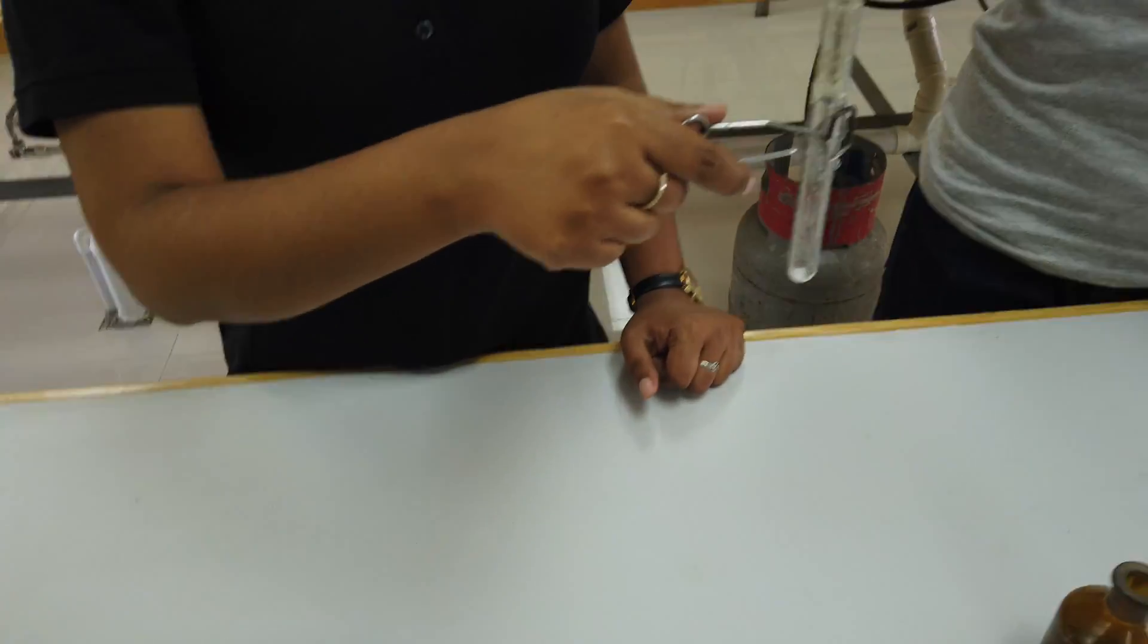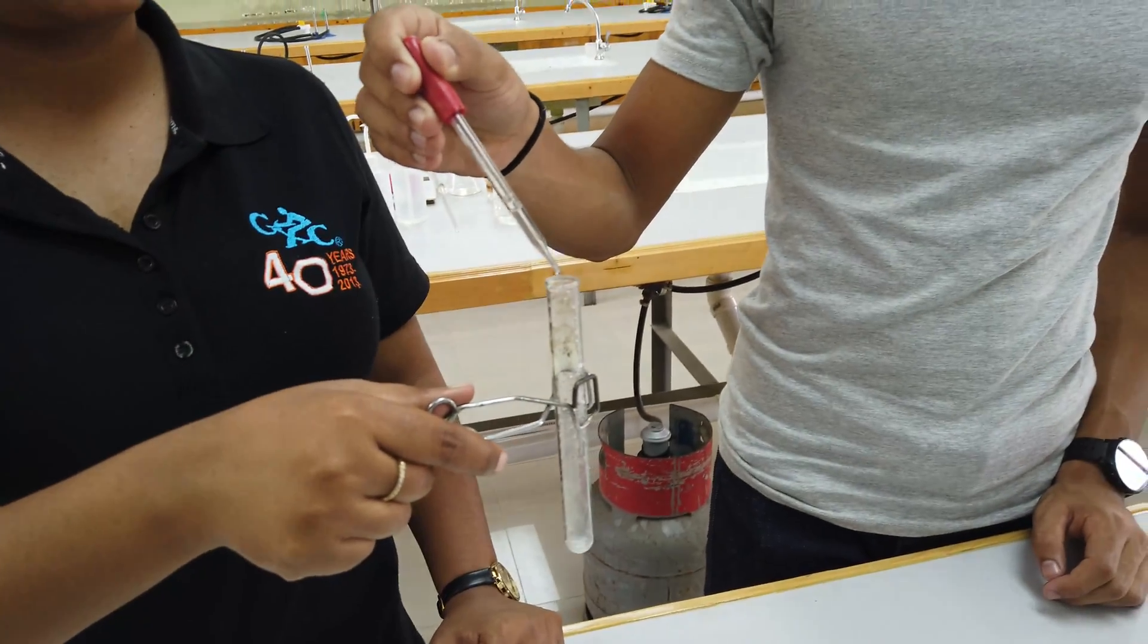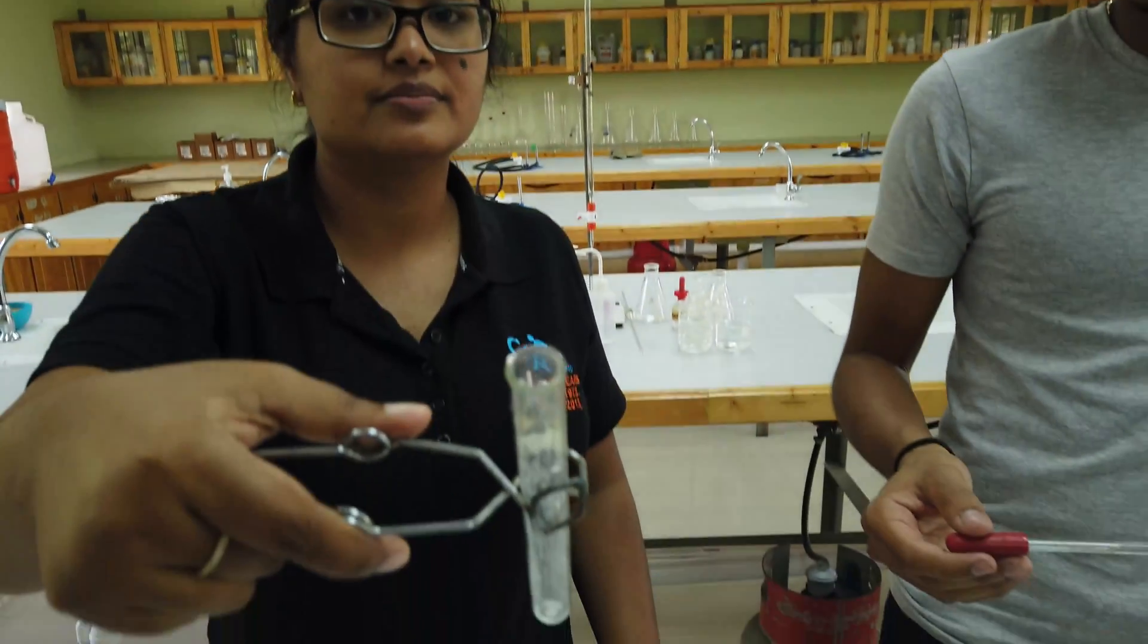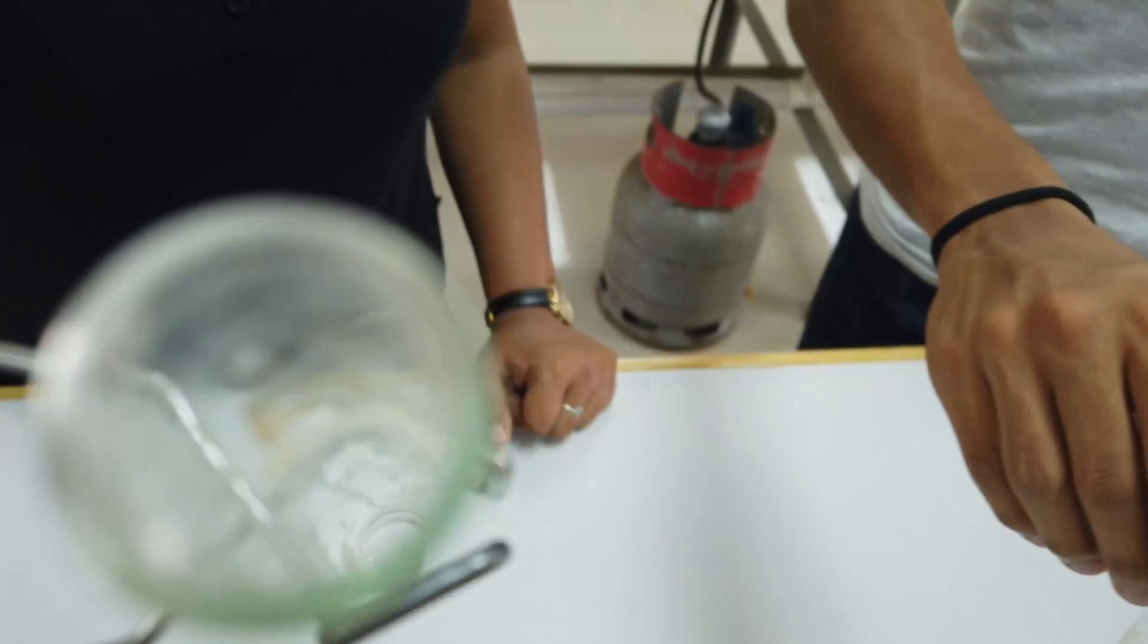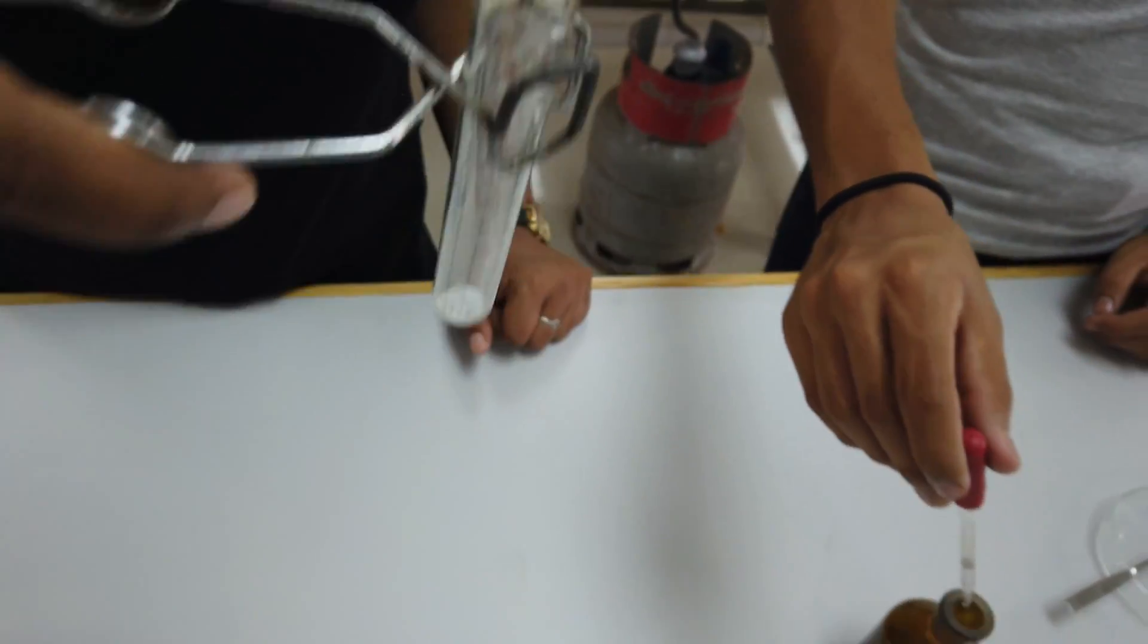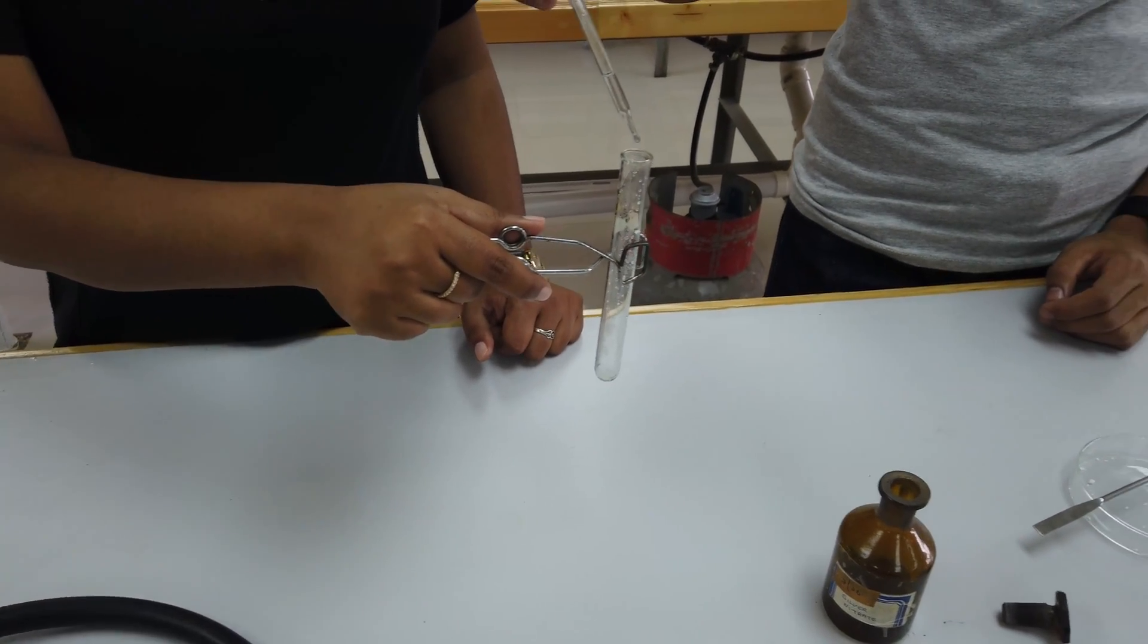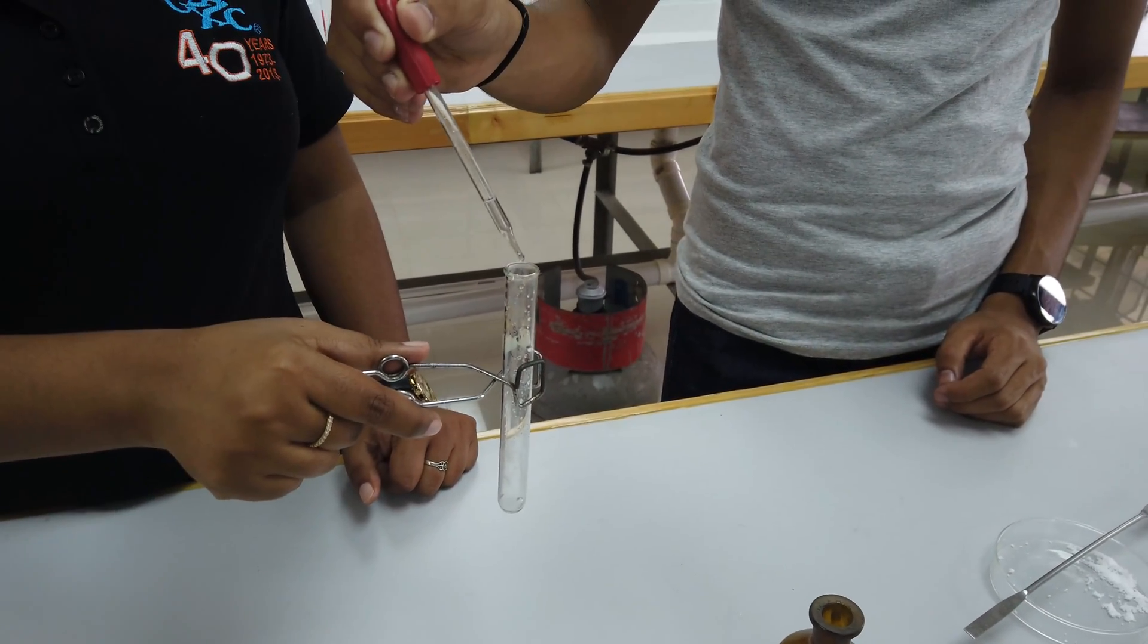If you look at the bottom of the test tube - the salt sample seems to be dissolving. We can see the solution is colorless. Because no precipitate has been formed, it really means no chloride, bromide, or iodide ions are present.